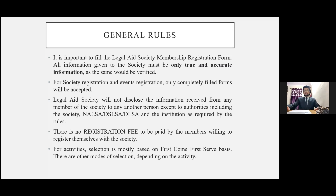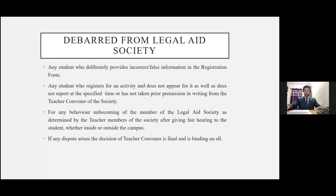Methods of selection vary with different kinds of activities. There are certain acts for which you can get debarred from the society. For instance, if any student deliberately provides false information, or any student who registers for an activity and does not appear for it and does not report in advance. Before becoming a non-member of the society, a chance of fair hearing is given to the student. If any dispute arises, the decision of the teacher convener is final. Now my fellow co-conveners Vinayak Boyer and Lavika Jaiswal will tell you about the activities previously undertaken by the society.